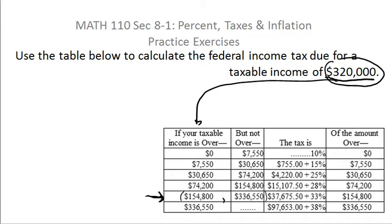And once you do, you have to read it properly. It says the tax is $37,675.50. And then there's a plus sign, plus 33% of something, of the amount over $154,800.